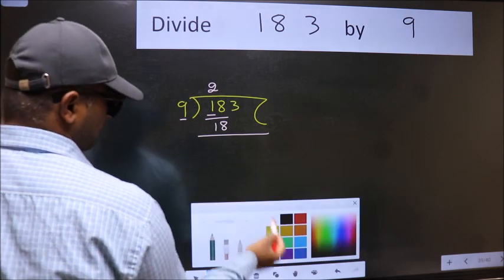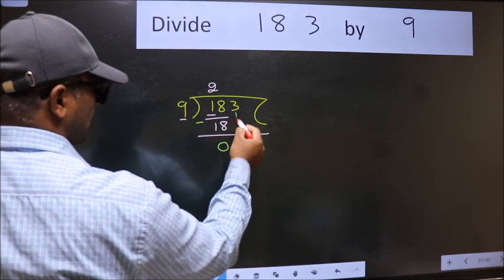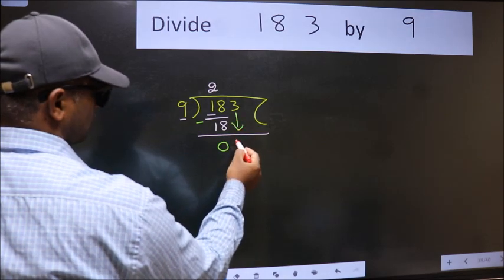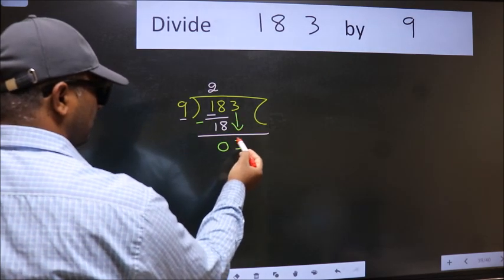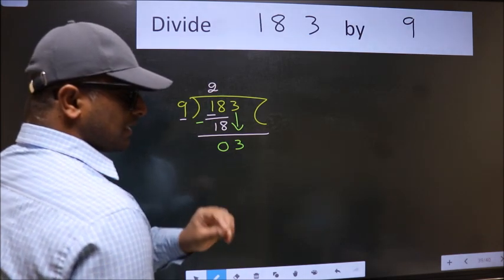Now we should subtract. We get 0. After this, bring down the beside number. So 3 down. After this step, the mistake happens.